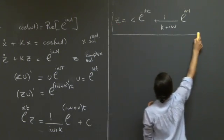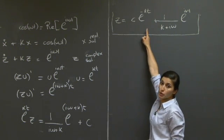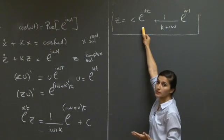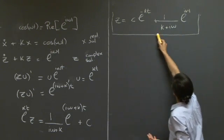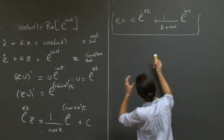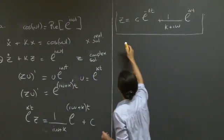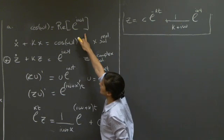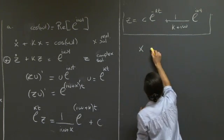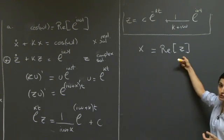So we keep the general solution here. The solution has two parts: the part coming from the homogeneous equation, which we can refer to as the transient — because after a long time t, this exponential decays if k is positive — and the part of the solution that comes from the sinusoidal input, or the forcing, which is the particular solution. To return to the original question, we were asked to solve the real-valued equation, so x is just the real part of this complex number.